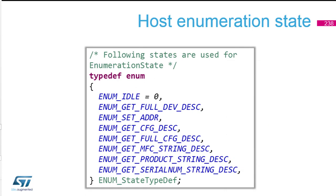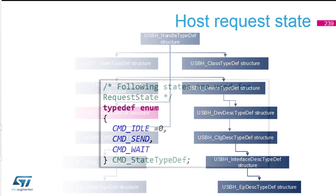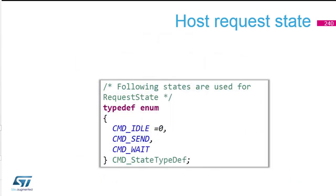During enumeration, there are also valid states. As you saw during the theory on the first day, you need to get the device descriptor, set the address, then ask for the configuration descriptor. Optionally, there are string descriptors, product descriptor, and serial number. You obtain all this information and it's stored in another structure, which will be shown later.